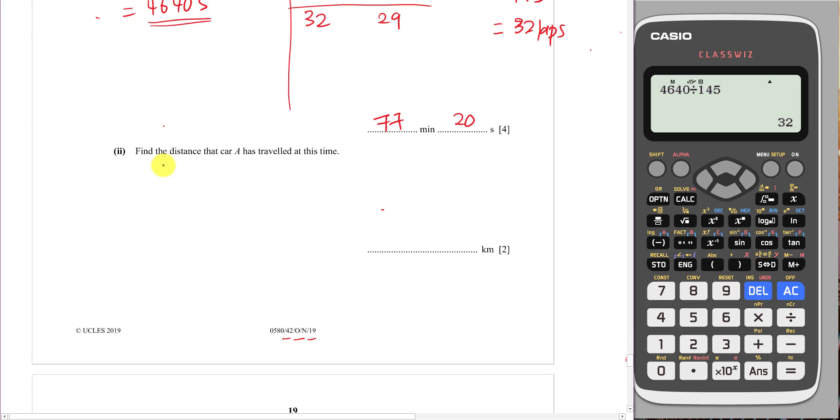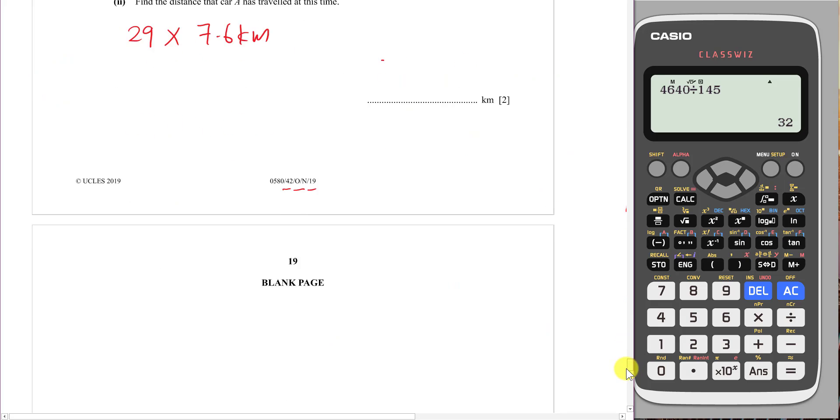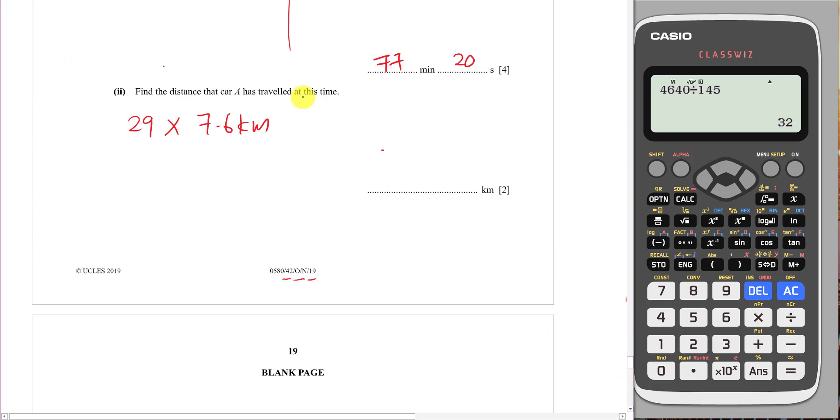Then we go to the last part. Find the distance car A traveled at this time. Right now we know car A actually traveled 29 laps. Each lap will take about 7.6 km. If you scroll up, you can see each lap is 7.6 km. To know the total distance car A traveled, I just use 29 multiply by 7.6. That gives me 220.4 km.